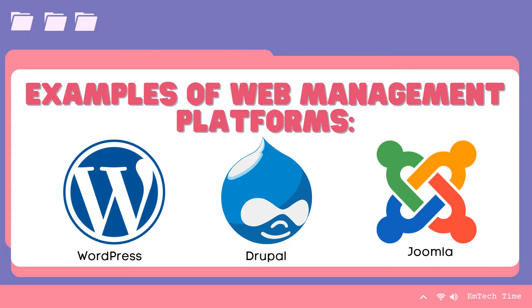Next we have Joomla, which is a free and open source content management system for publishing web content. Joomla is written in PHP and uses object-oriented programming, or OOP, techniques.